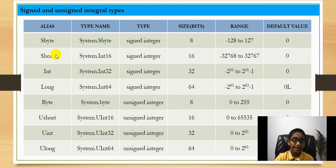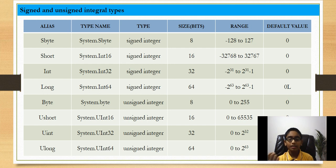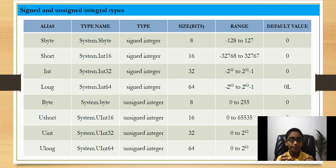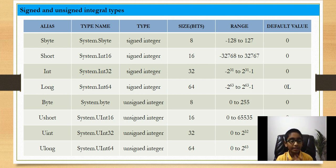We have a column with alias names — for example sbyte, short, integer, and so on — and a type name, which is the .NET Framework type corresponding to the alias name. When we type sbyte in our C# code, the compiler internally converts that to System.SByte. We also have a column indicating whether a type is signed or unsigned. For example, byte is an unsigned integer and short is a signed integer.